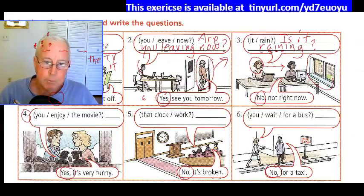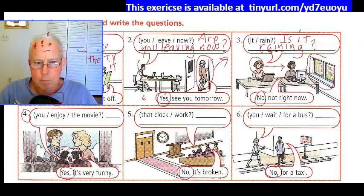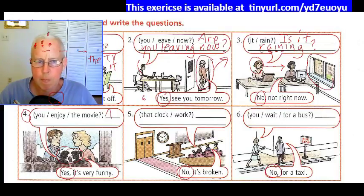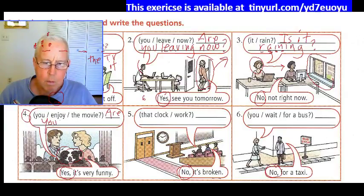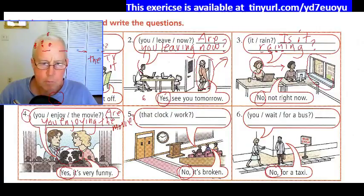Number four: these two silhouettes of people are watching a movie, maybe on a date. It looks like he is asking her. So the words are 'you enjoy the movie,' which becomes: Are you enjoying the movie? Yes, it's very funny. The short answer: Yes, I am.